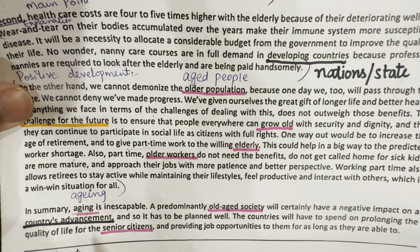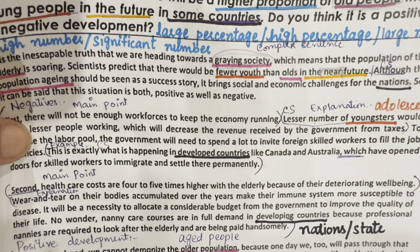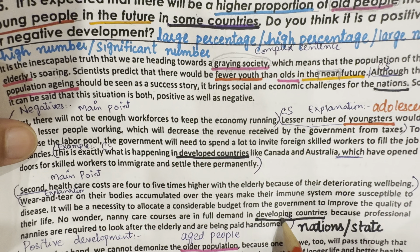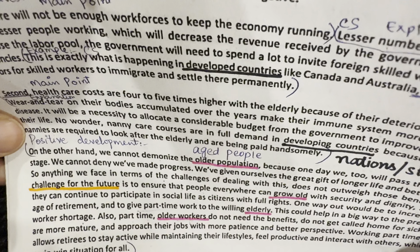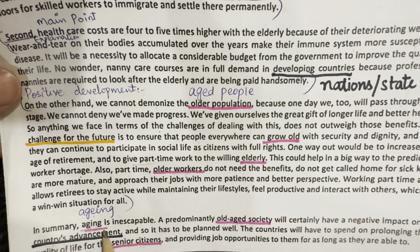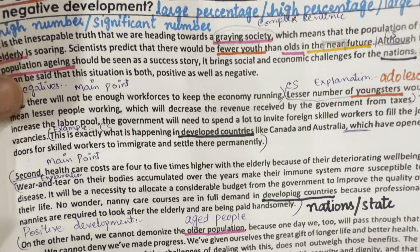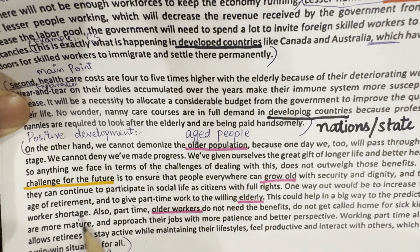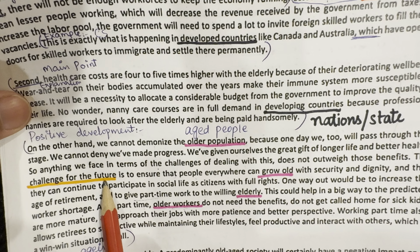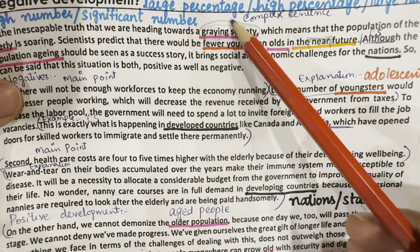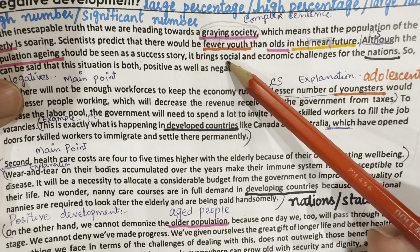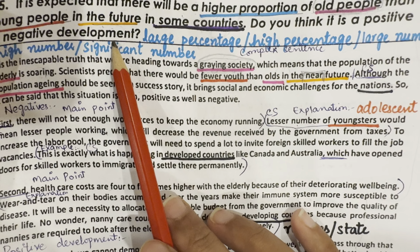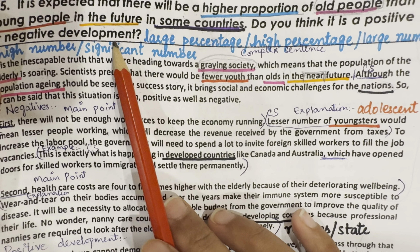For 'some countries,' we use 'nations' — countries and nations are synonyms. So we use topic-related vocabulary, synonyms, and collocations. Instead of writing 'countries,' we use 'nations.' In the first body paragraph, we write 'developed countries'; in the second body paragraph, we write 'developing countries.' You can also write 'nations' and 'state' as synonyms. In the conclusion, we write 'countries advancement.'